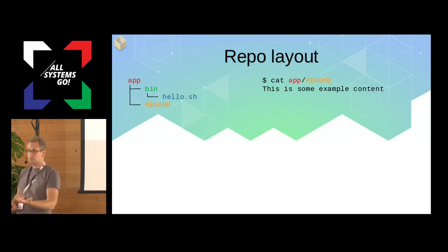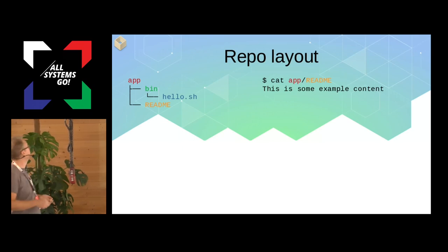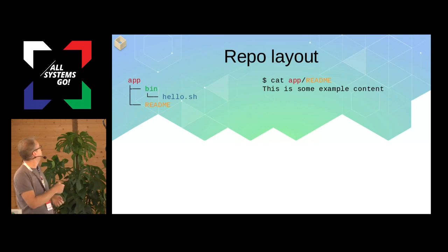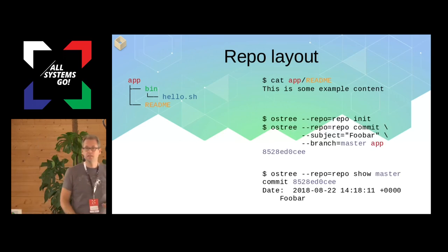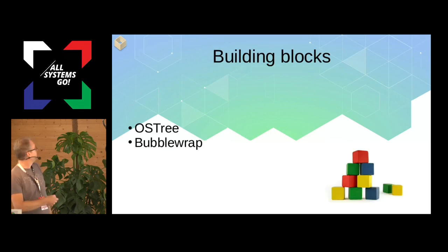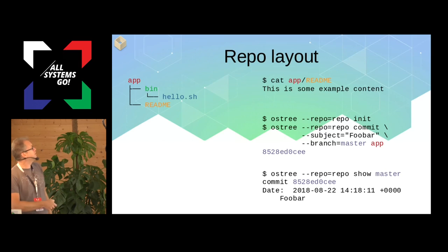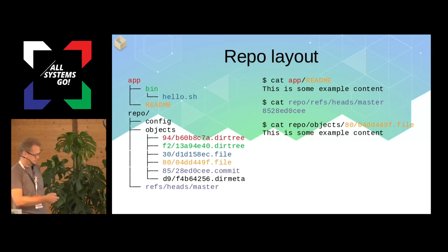We're going to look at the repository layout, which is how OSTree differs from Git. An app is just a directory with some files — that's what all apps are, a directory with files plus metadata. When you commit this, you initialize the repository, then commit to a branch called master this directory called 'app', and it generates a commit ID. You can look at it and it looks like a commit — basically what Git would give you. It generates a repository that, if you've looked in a .git directory, is very similar.